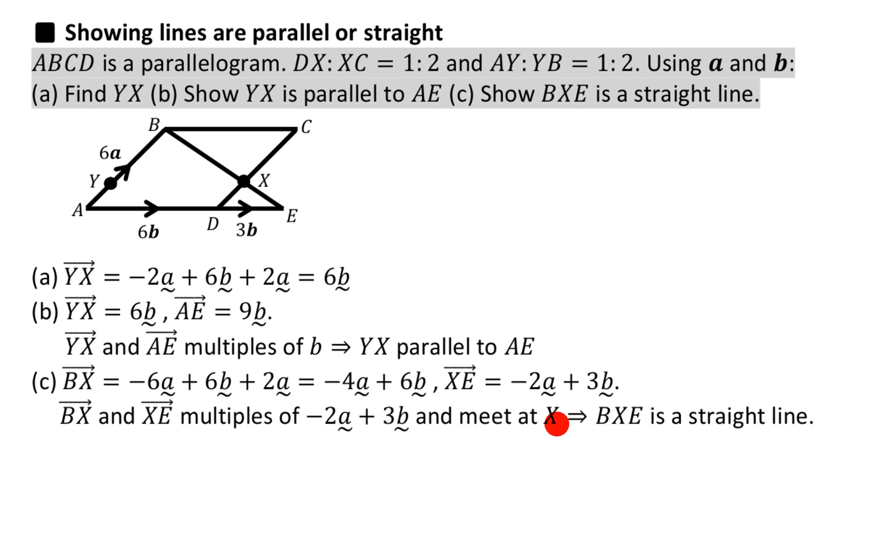And that's really obvious, but you've got to say it because it's part of the proof. And then you can use the 'gives' sign again: therefore it's a straight line. BXE is a straight line because we know the BX bit and the XE bit point in the same direction, and clearly they meet at X, so they make one straight line.